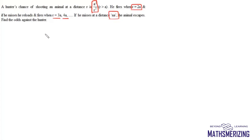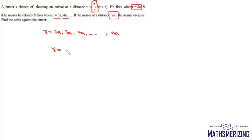In this question, the hunter fires at 2a, 3a, 4a, all the way up to na. We can simply say r equals k·a, where the value of k starts from 2 and goes all the way up to n.